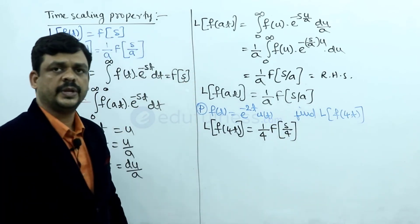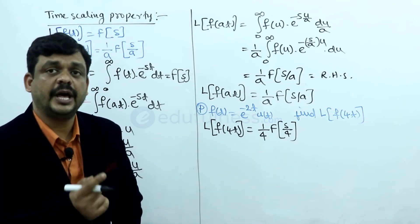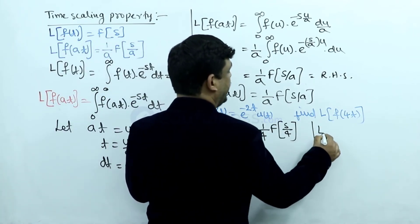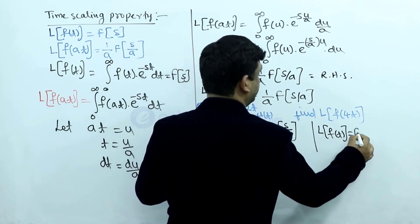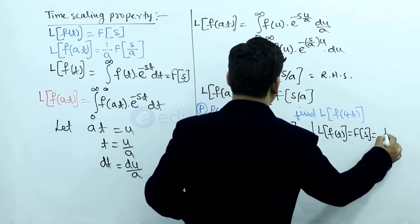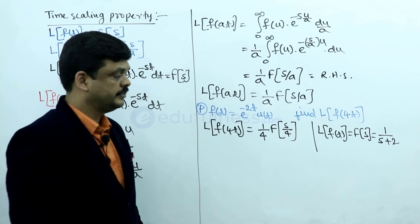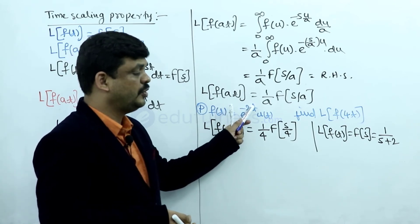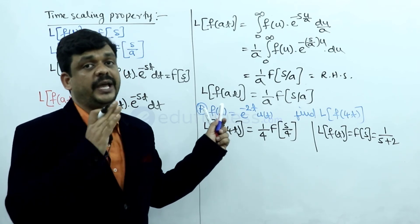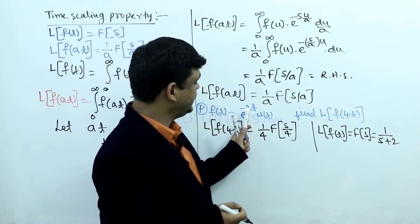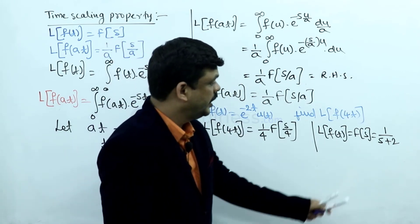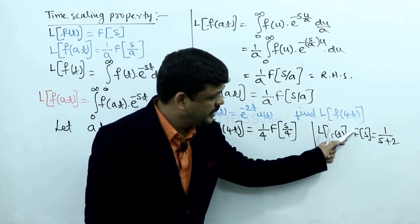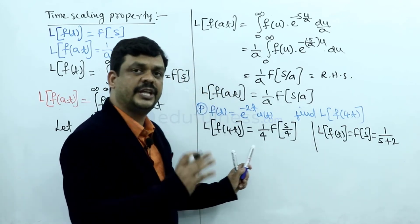It becomes (1/4) · F(s/4). Now we need to find F(s). Since f(t) = e^(−2t) · u(t), this is similar to e^(−at) · u(t), whose Laplace transform is 1/(s+a). With a = 2, F(s) = 1/(s+2). Now for F(s/4), replace s with s/4 in F(s): F(s/4) = 1/(s/4 + 2).